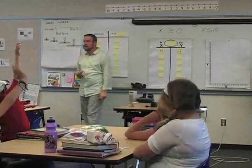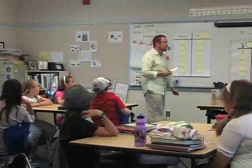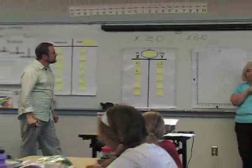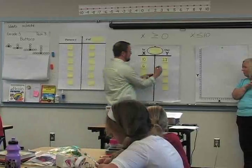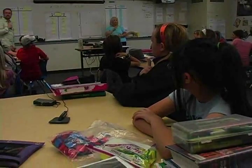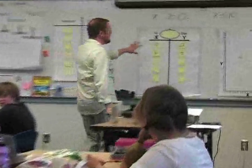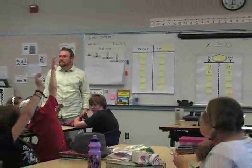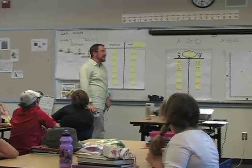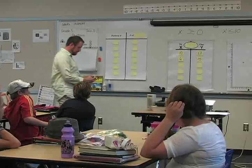Guess my rule — Kelsey guesses x = 6. After that point is plotted, the teacher asks who thinks they know the rule and calls for another x value. Megan guesses 20, but the teacher reminds her of the parameters — it needs to be between 0 and 10 — so Megan changes her answer to 8.